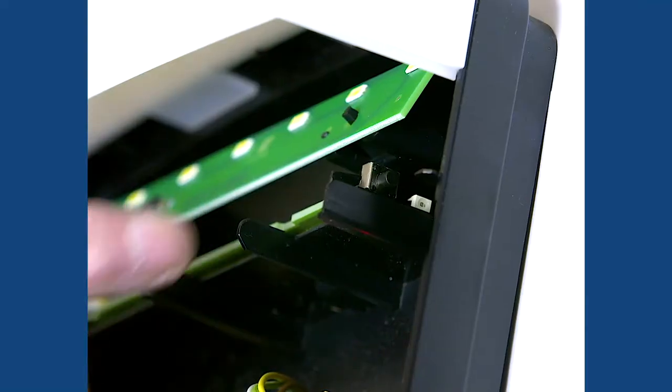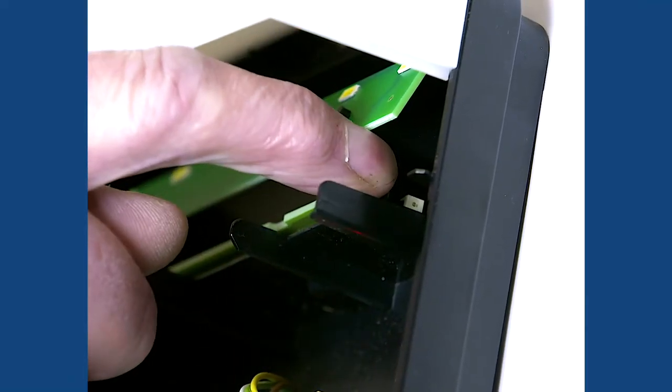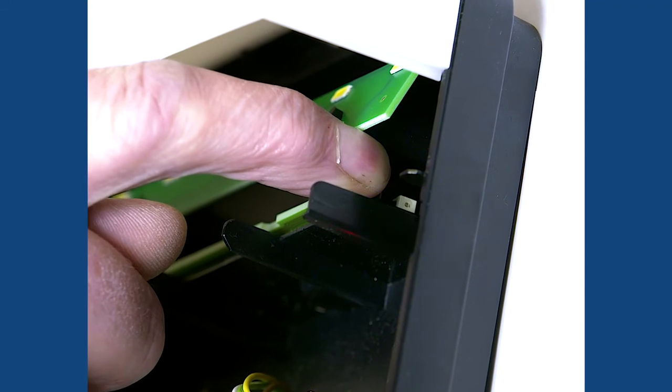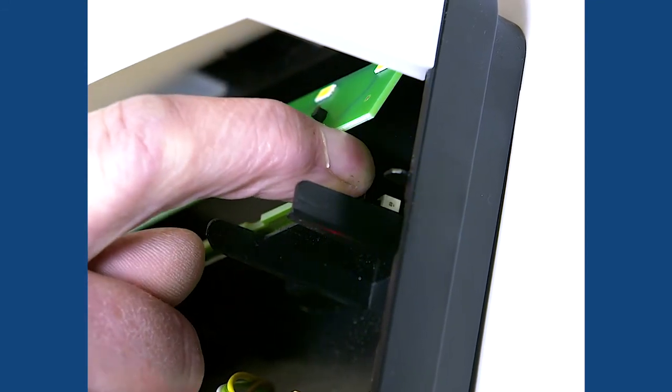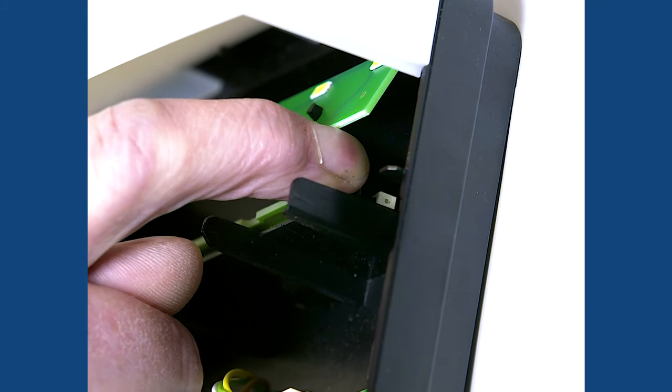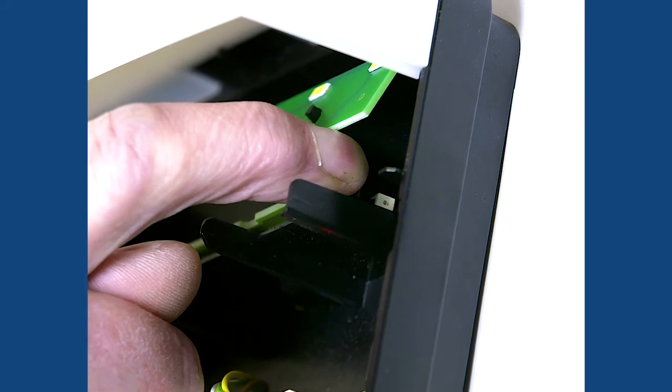There might be a situation where you need to delete a handset, for example because one has gone missing. To do this press and hold the program button on the receiver until the LED flashes rapidly. Once you see the rapid flash all programmed handsets have now been deleted from the receiver.